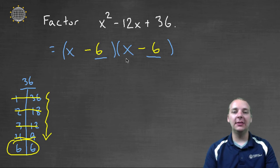But -6x and -6x does add to -12x, and -6 times -6 multiplies to 36.